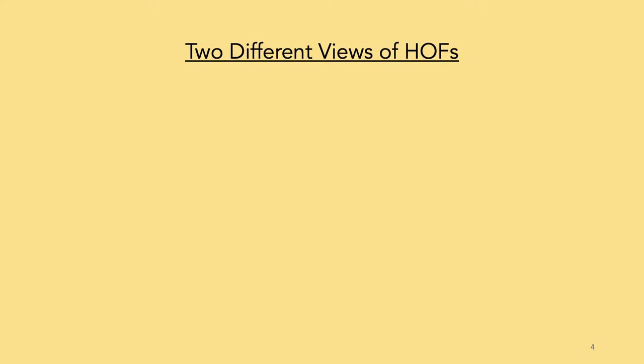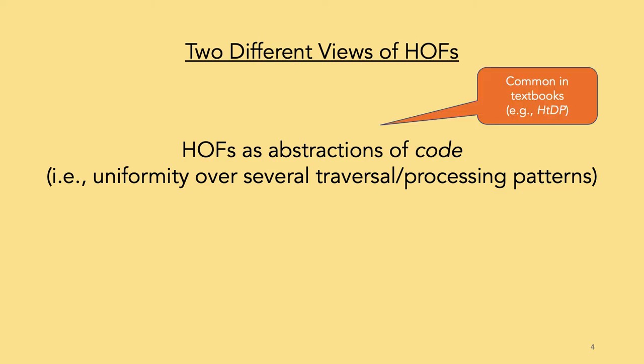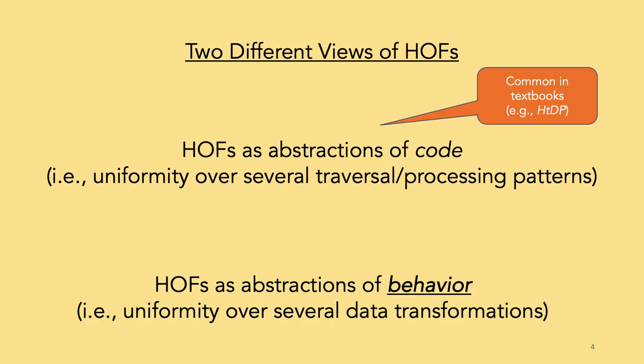Okay, seriously now. Higher order functions are a construct, but they can have several conceptualizations. One common view is as abstractions of particular pieces of code, especially over data structure traversal. Many books and tutorials take this perspective. However, when we try to use them as programmers, that's often not how we approach them. Rather, we think of them in terms of an intended behavior — I want to uniformly transform this list, or pick out just the relevant items. That's what we focus on in this paper.